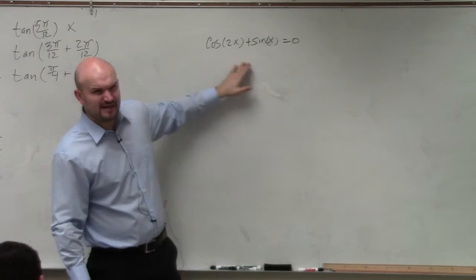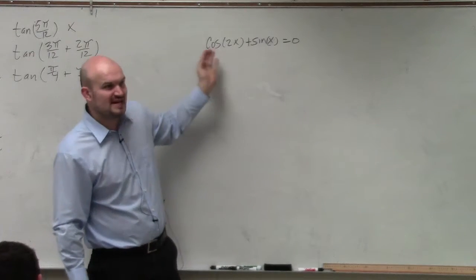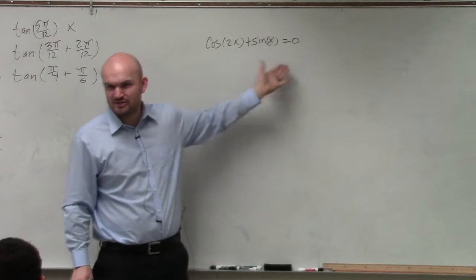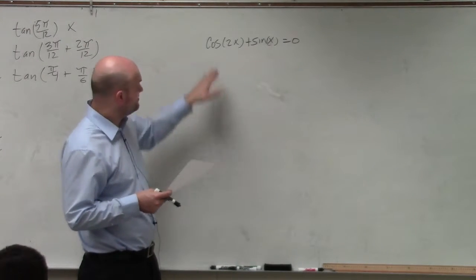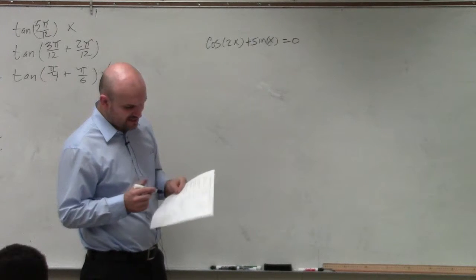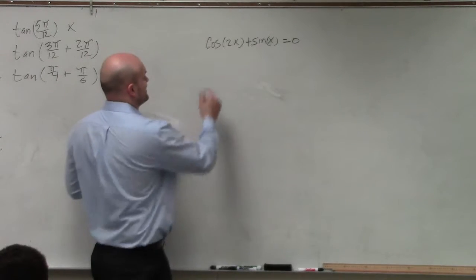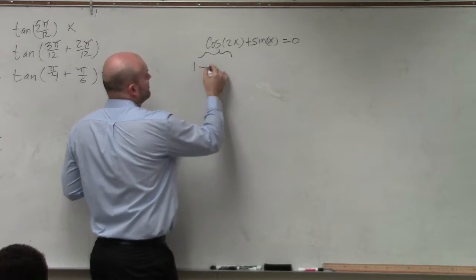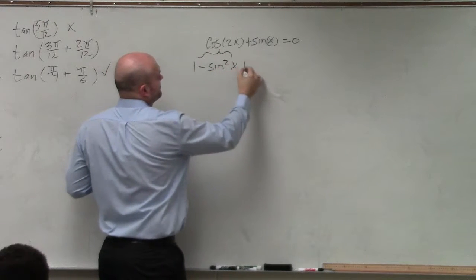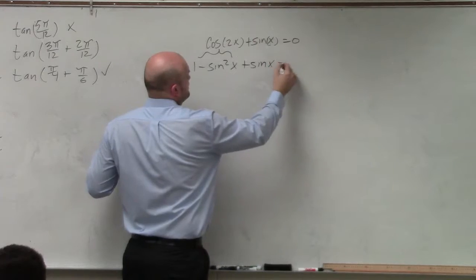Well, in this case, it would make more sense to have everything in terms of sines or cosines. Wouldn't you guys agree as far as solving? That'd make things usually easier. So I do see that this can be rewritten as 1 minus 2 sine squared of x. So I can rewrite cosine as 1 minus 2 sine squared of x plus sine of x equals 0.